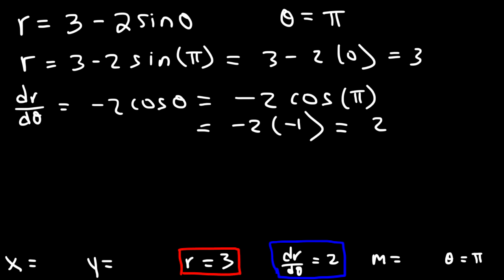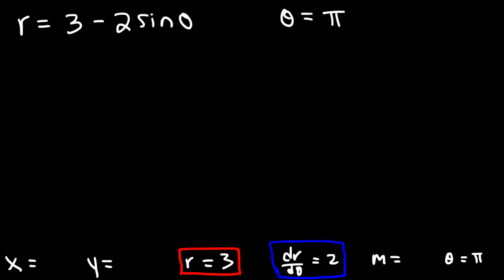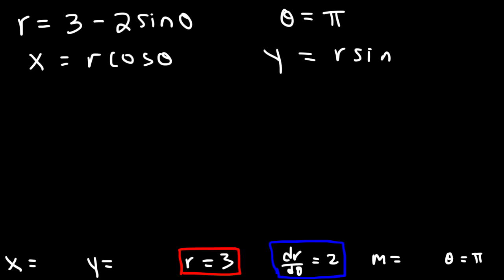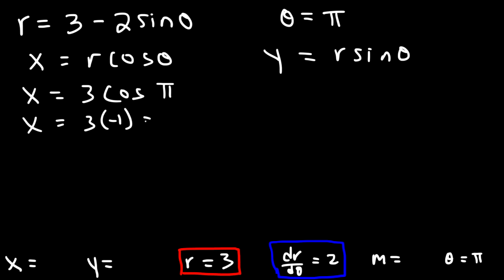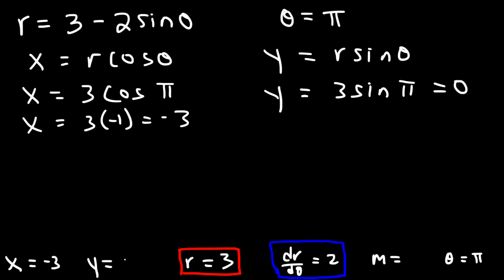Now let's move on to x and y. x = r·cos(θ) and y = r·sin(θ). With r = 3 and θ = π: x = 3·cos(π) = 3·(−1) = −3. And y = 3·sin(π) = 3·0 = 0. So our point is (−3, 0).